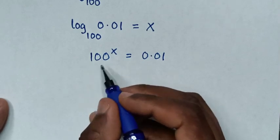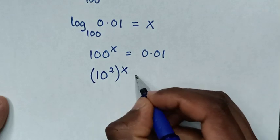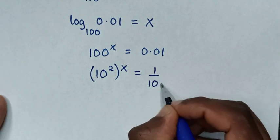Then from 100 is same as 10 square, then bracket power of x is equal to 0.01 into fraction is 1 over 100.